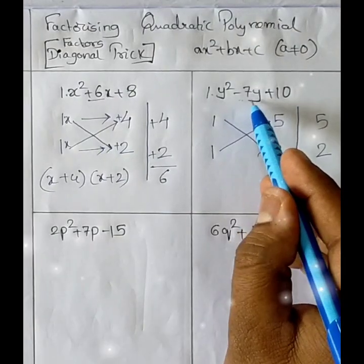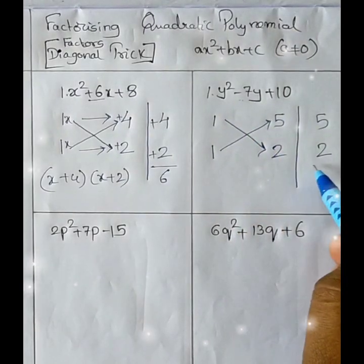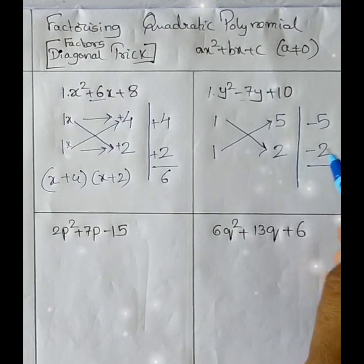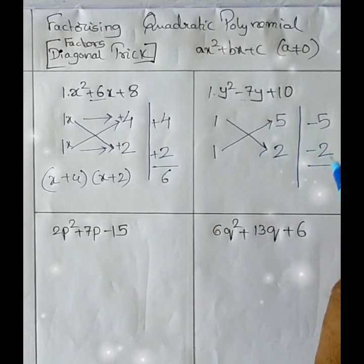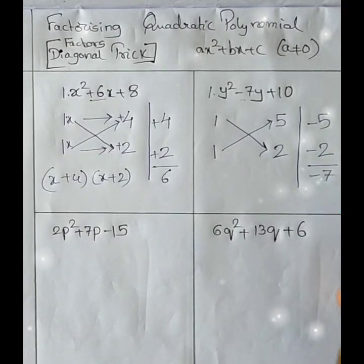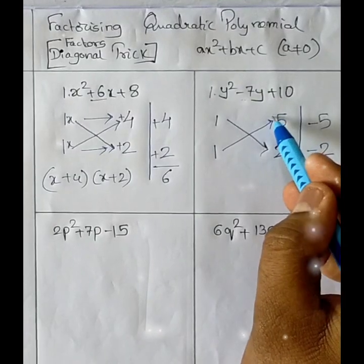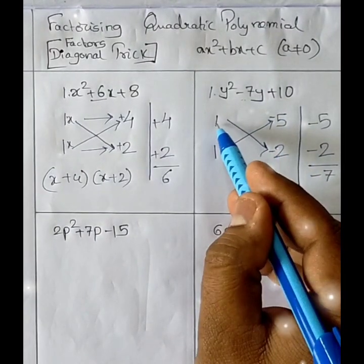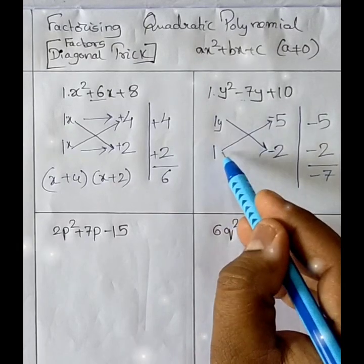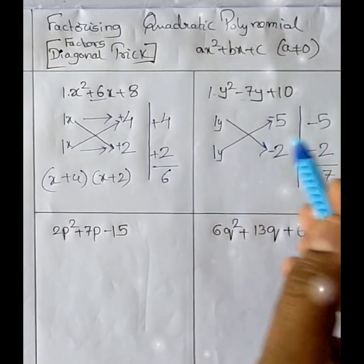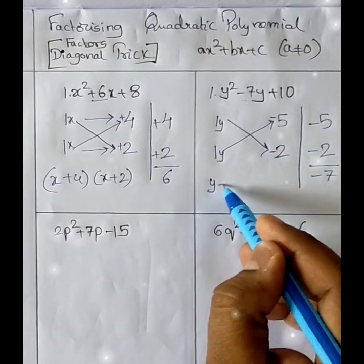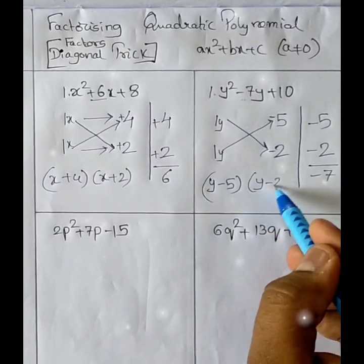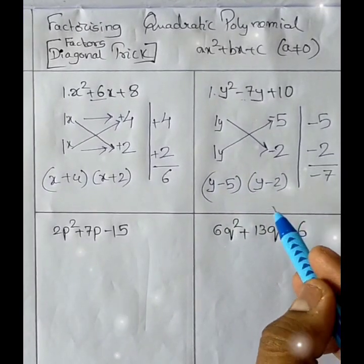Now I check the middle term — it is minus 7. So I take the signs as minus 5 and minus 2. Adding these gives minus 7. I put the same signs: minus 5 and minus 2, replacing 1 with the variable y. So the factors are (y − 5)(y − 2).